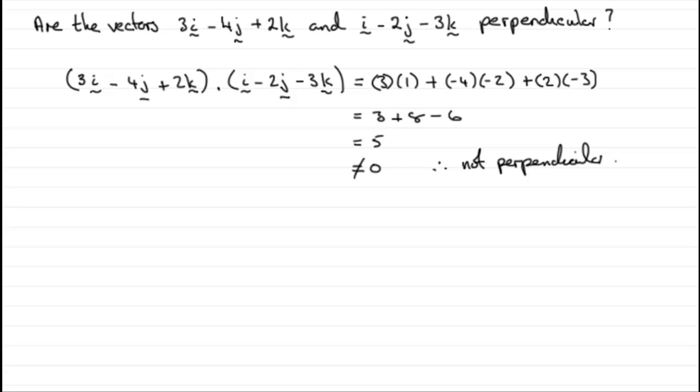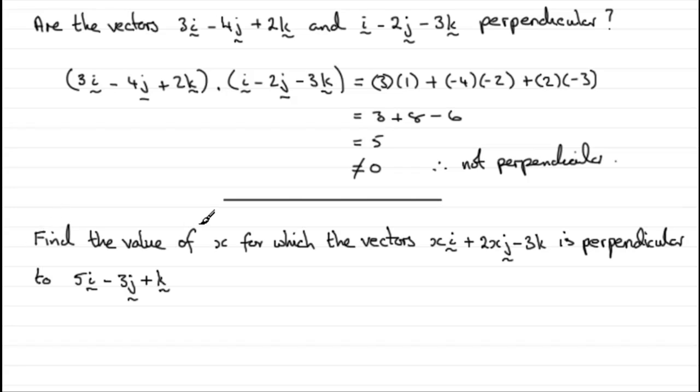Find the value of x for which the vectors xi plus 2xj minus 3k is perpendicular to the vector 5i minus 3j plus k.